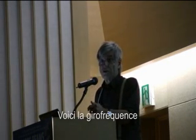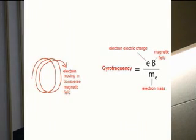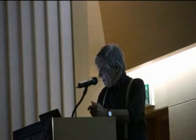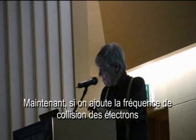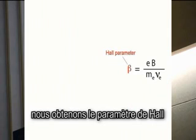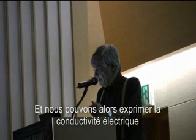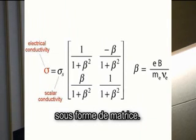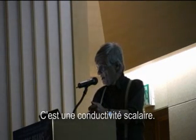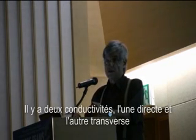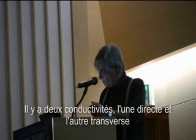This is the cyclotron frequency — the frequency of an electron rotating in a magnetic field, which is well-known. If I add the electron gyration frequency, I get the well-known Hall parameter. The electrical conductivity then becomes a matrix, with a scalar conductivity index, parallel conductivity, and transverse conductivity.